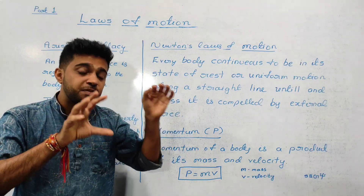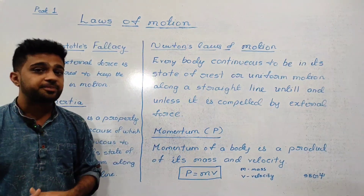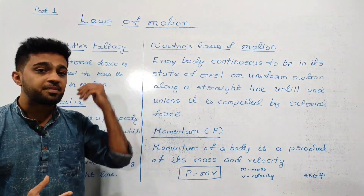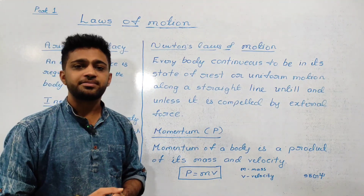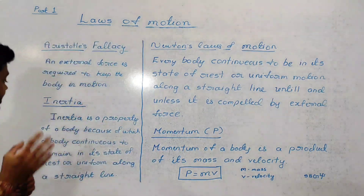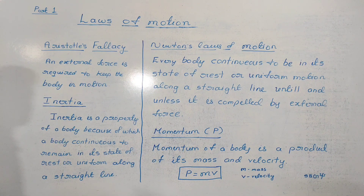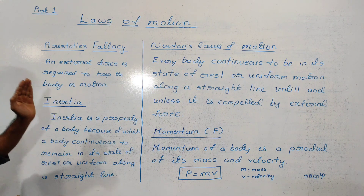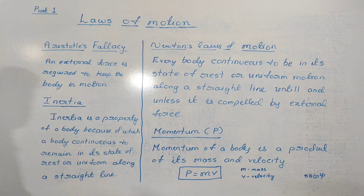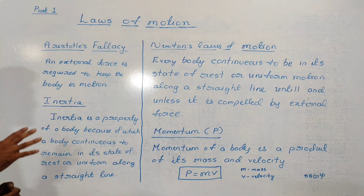Now, the concept we want to explain is called inertia. Inertia is the property of a body because of which a body continues to be in the state of rest or uniform motion along a straight line.